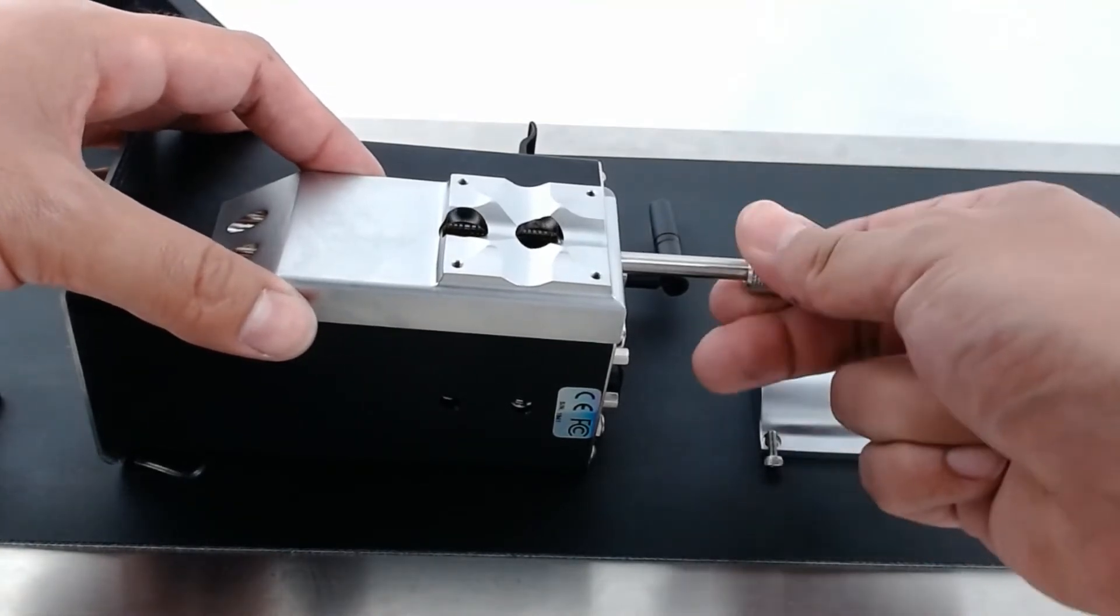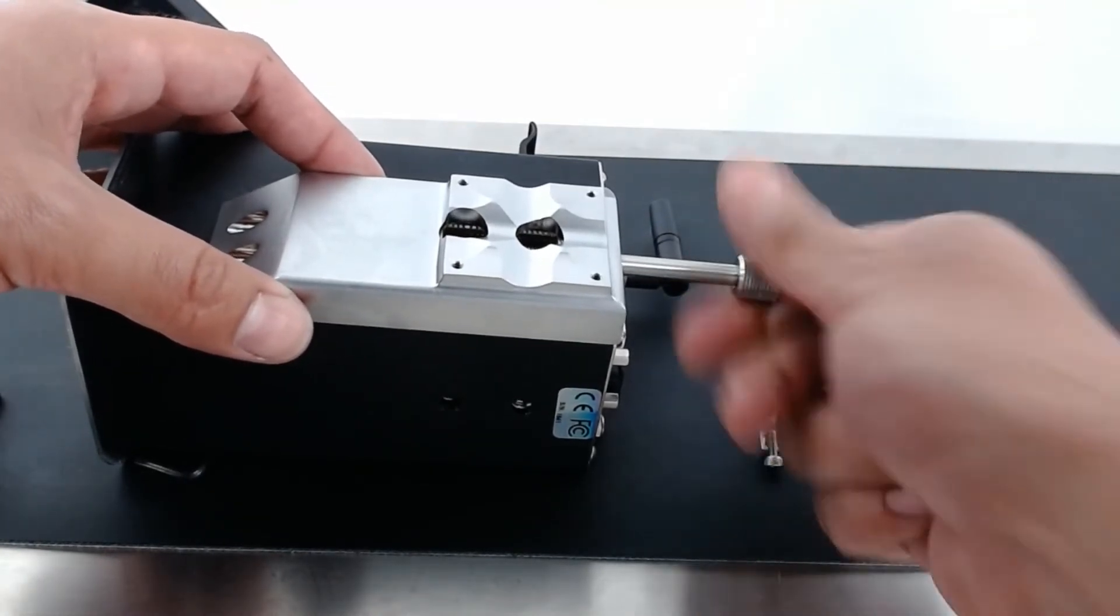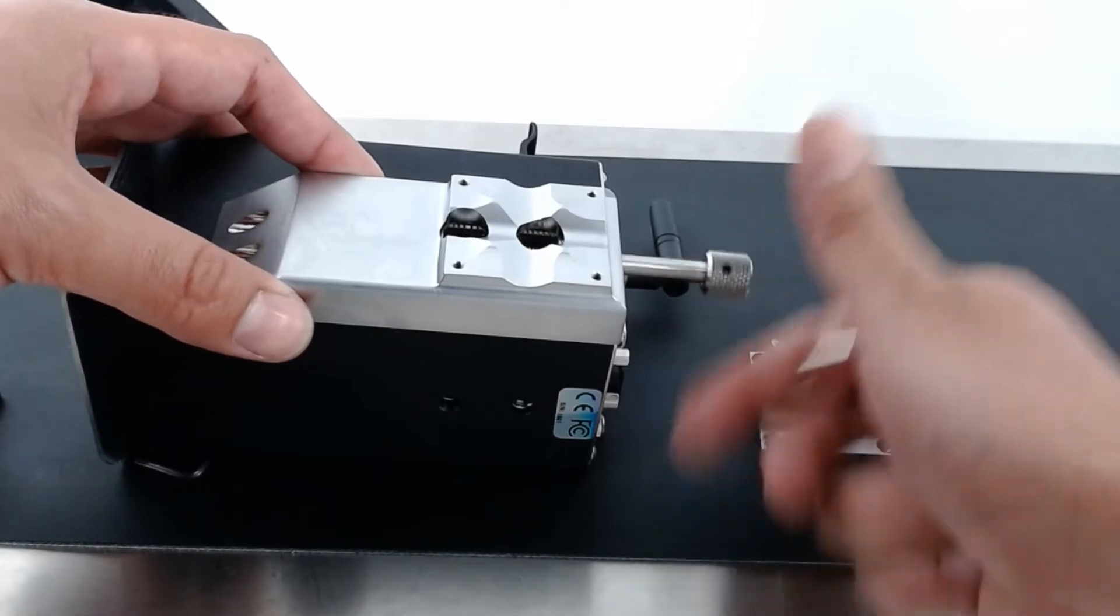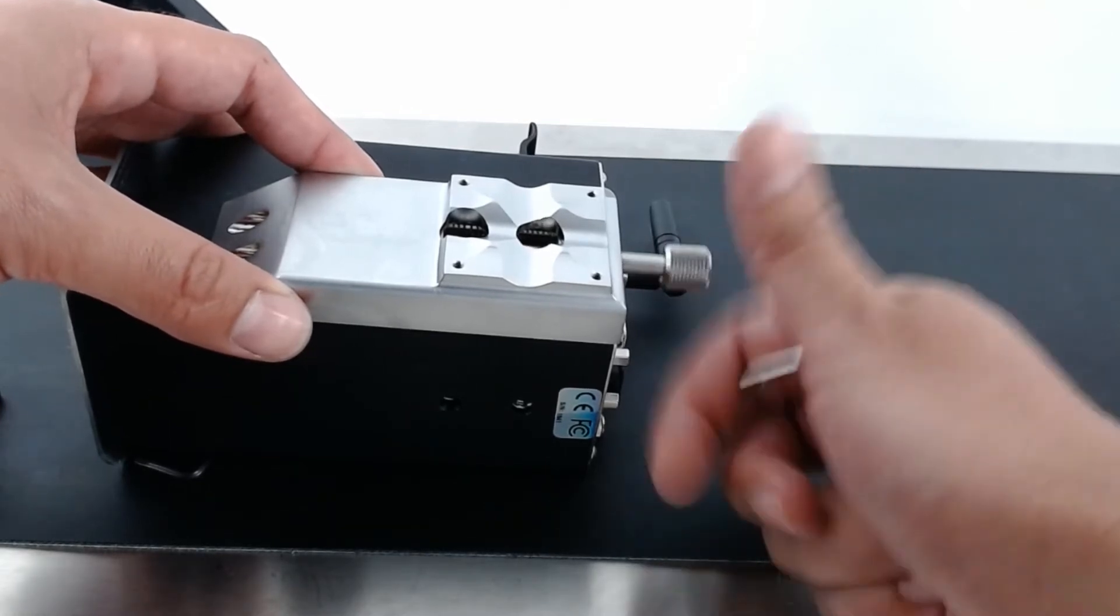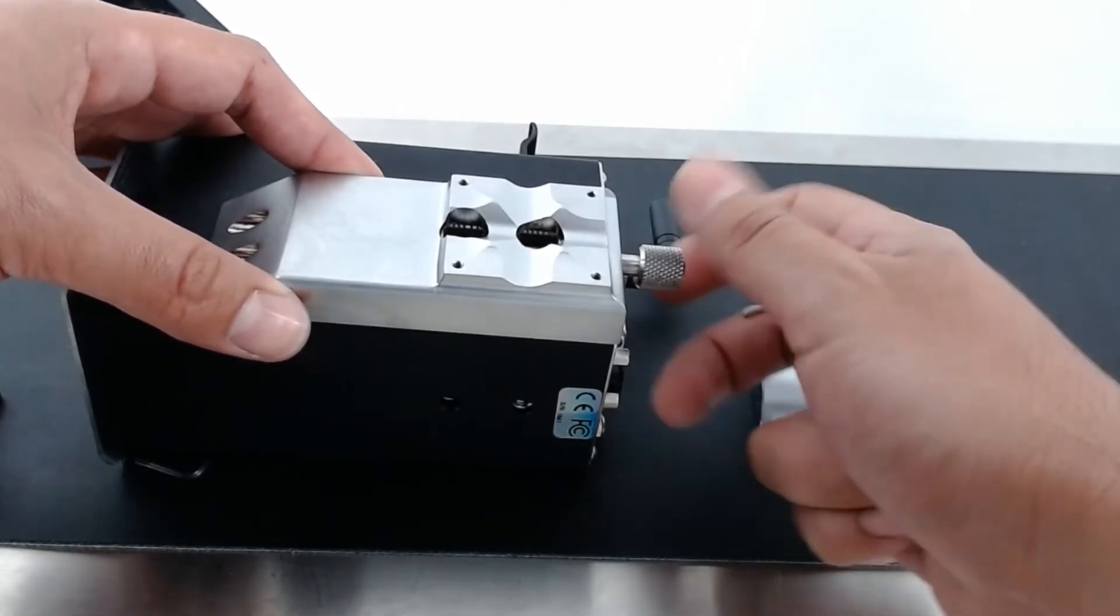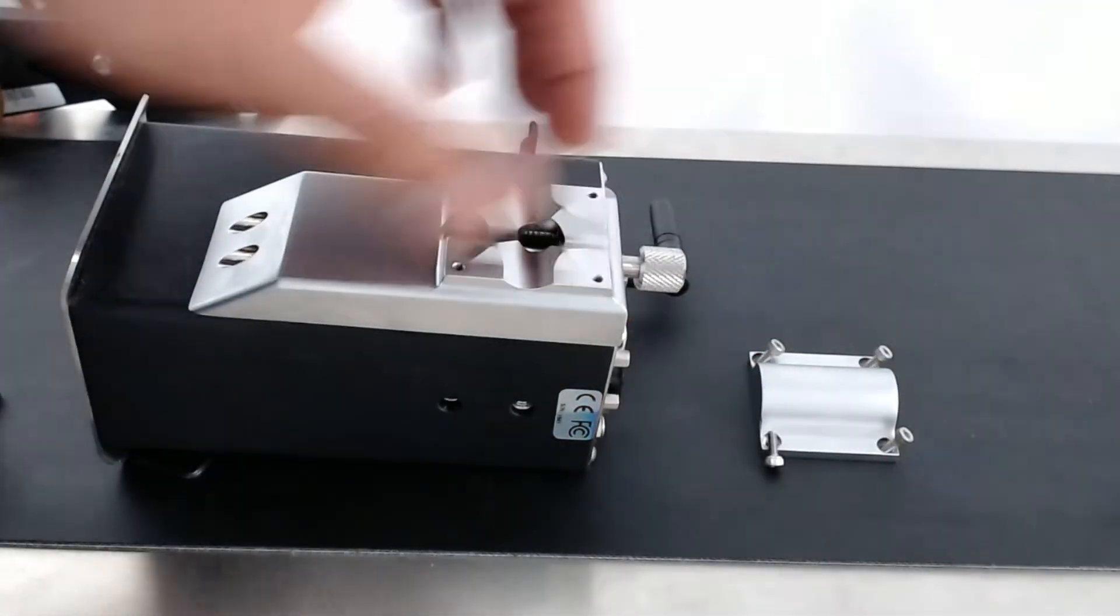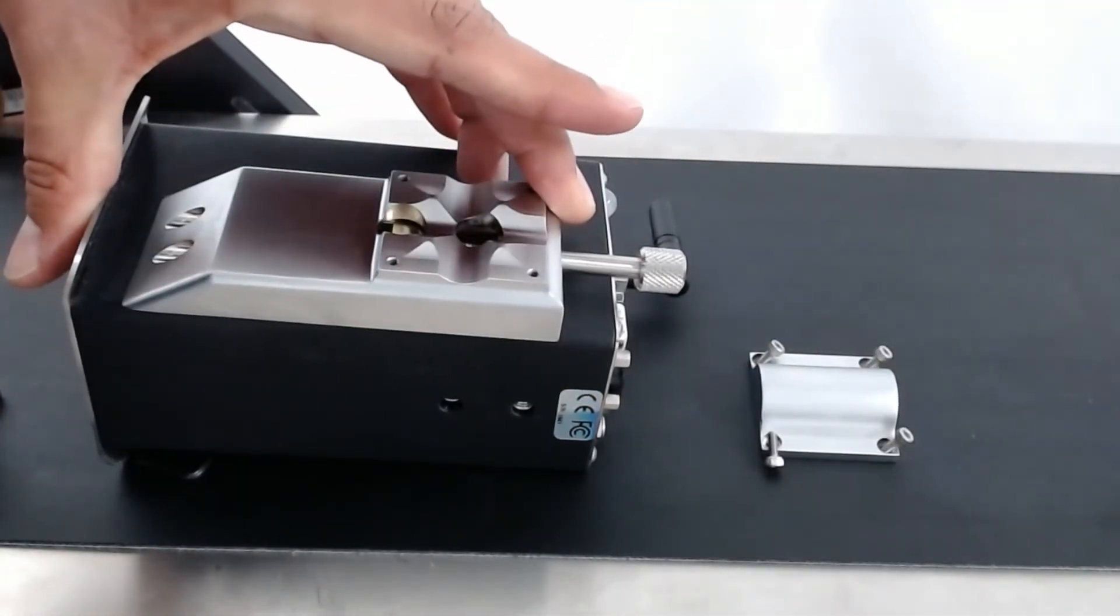So let's go ahead and put our thumb screw back in. Great. So now this is hand tight right now and you still have that same range of motion.